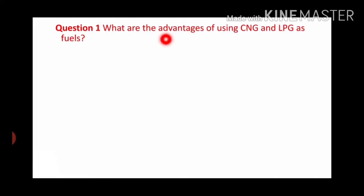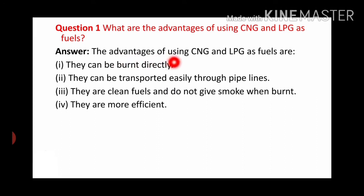Question Number 1 is: What are the advantages of using CNG and LPG as fuels? The advantages of using CNG and LPG as fuels are: (1) They can be burnt directly, (2) They can be transported easily through pipelines, (3) They are clean fuels and do not give smoke when burnt, (4) They are more efficient.